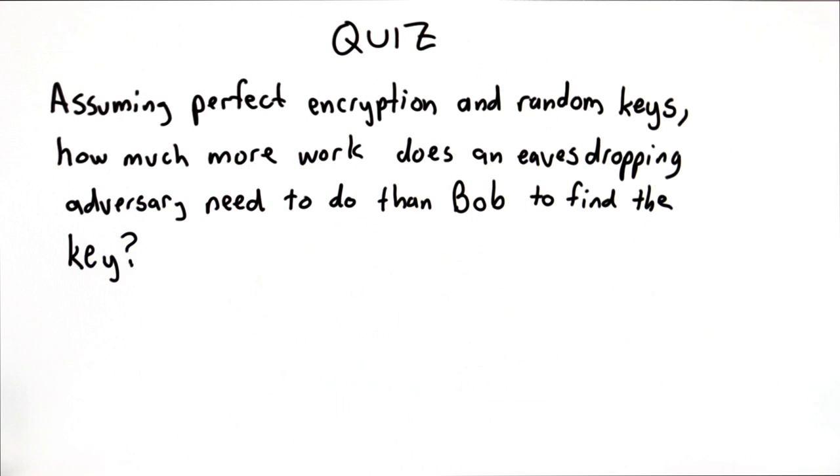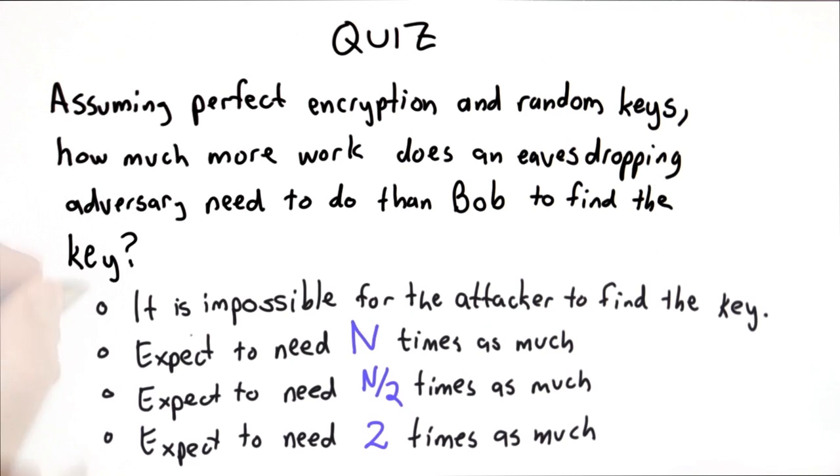Assuming encryption and the random number generation work perfectly, the question is how much more work does an eavesdropper have to do than Bob to find the key? An eavesdropper hears all the messages between Alice and Bob and wants to determine the key that they'll use to communicate. Here are the choices.